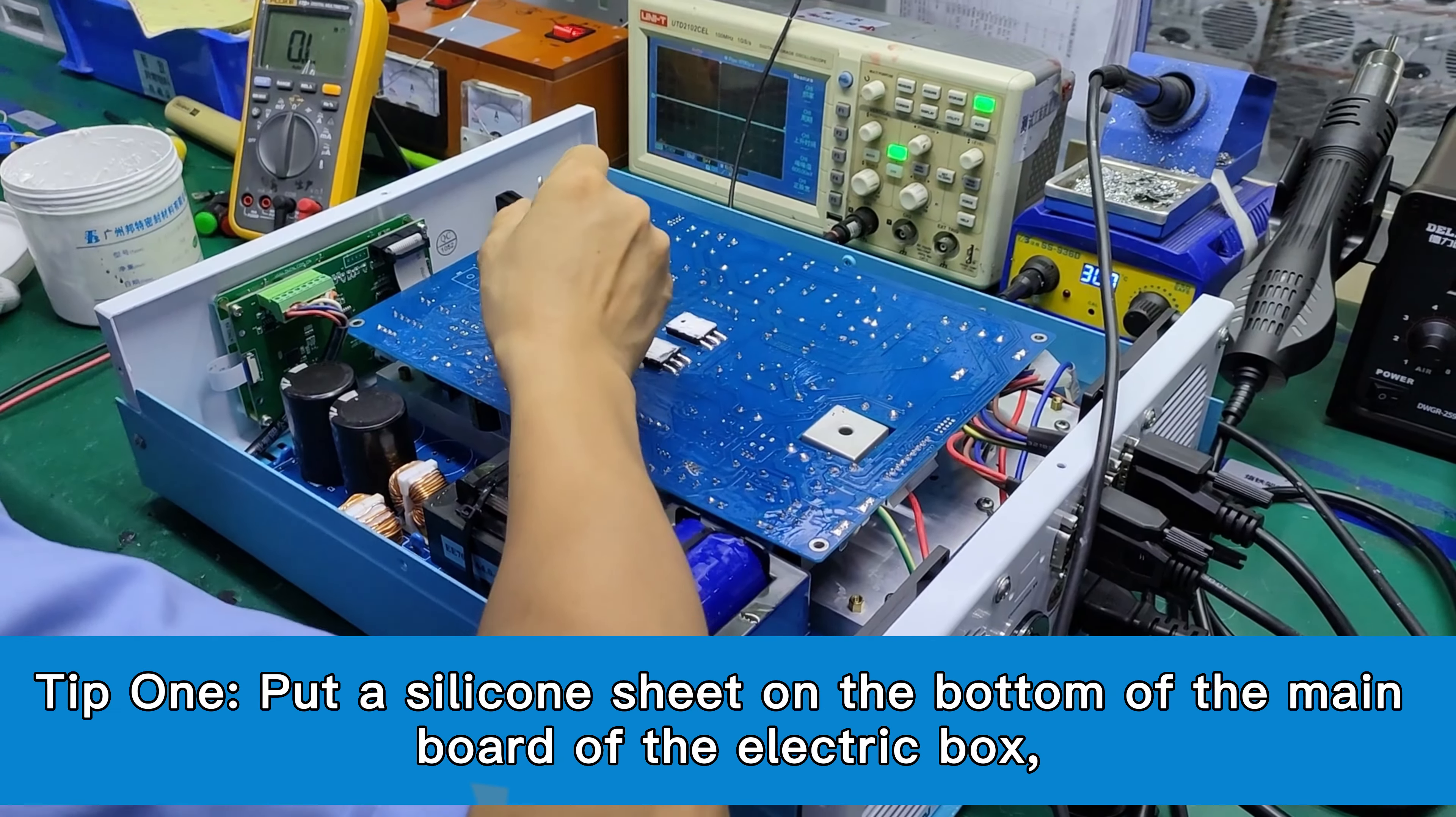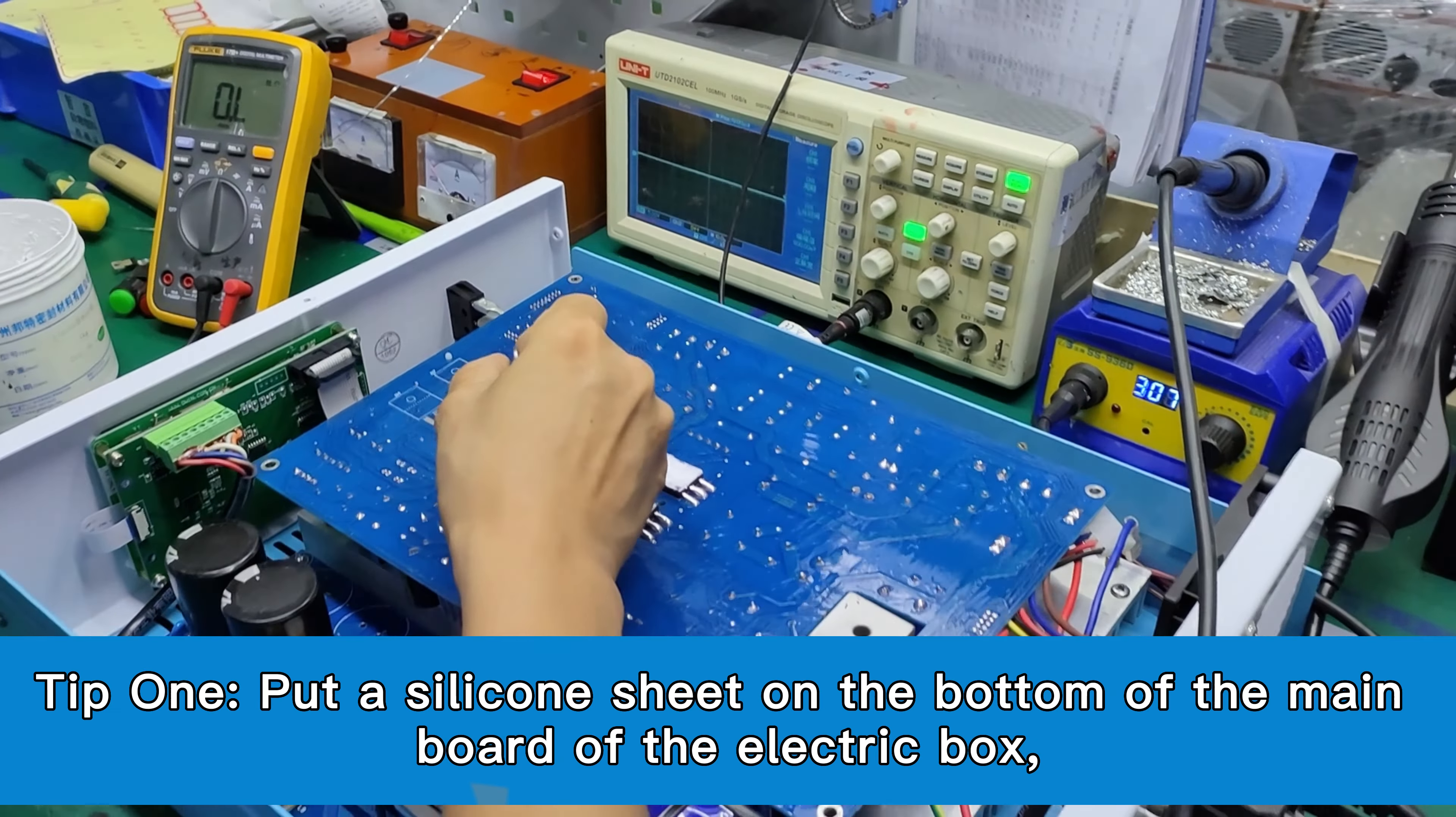Tip 1: Put a silicone sheet on the bottom of the main board of the electric box. Ensure that there is a gap with the electric box shelf.